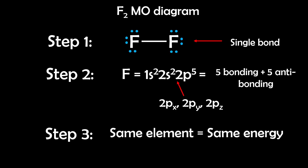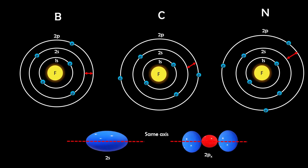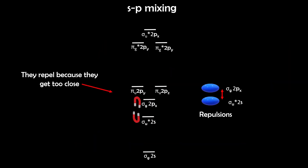Step 3: Compare orbital energies. Since both atoms are fluorine, their atomic orbitals are the same energy. Step 4: Check sp mixing. In F₂, sp mixing doesn't occur. Fluorine is very electronegative, which pulls the 2s orbital to a lower energy state compared to the 2p orbital. Because of the large energy gap between 2s and 2p, they don't interact much. But in lighter elements like boron, carbon, and nitrogen, the 2s and 2p orbitals are close in energy and on the same axis, so they can mix.